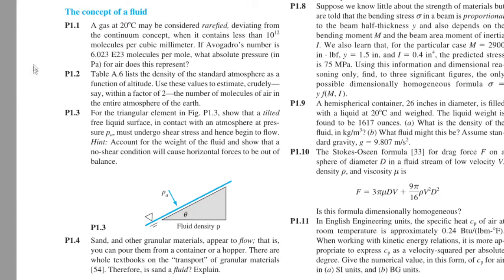In the last video we solved problem 1, which concerned the continuum — the limit of the continuum hypothesis. And on problem 2, we will be estimating the number of molecules of air in the entire atmosphere of the Earth. Let's read the problem: Table A.6 lists the density of the standard atmosphere as a function of altitude. Use these values to estimate crudely — say within a factor of 2 — the number of molecules of air in the entire atmosphere of the Earth.